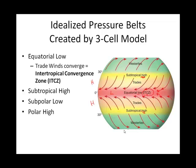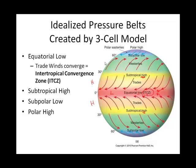Looking at the Ferrel cell — F for Ferrel, and P for polar — those are our three cells in each hemisphere. Associated with the Ferrel cell, or between the Ferrel cell and the polar cell, we have a subpolar low, where the polar cell and Ferrel cell are both ascending. And then we have a relatively high pressure at 90 degrees latitude — that's called the polar high.